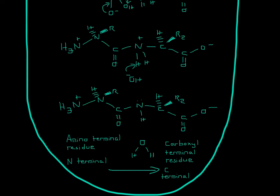This side is called the amino terminal residue, also called the N-terminal. And this side is the carboxyl terminal residue, also called the C-terminal. As a standard of writing, they go from the N-terminal to the C-terminal.